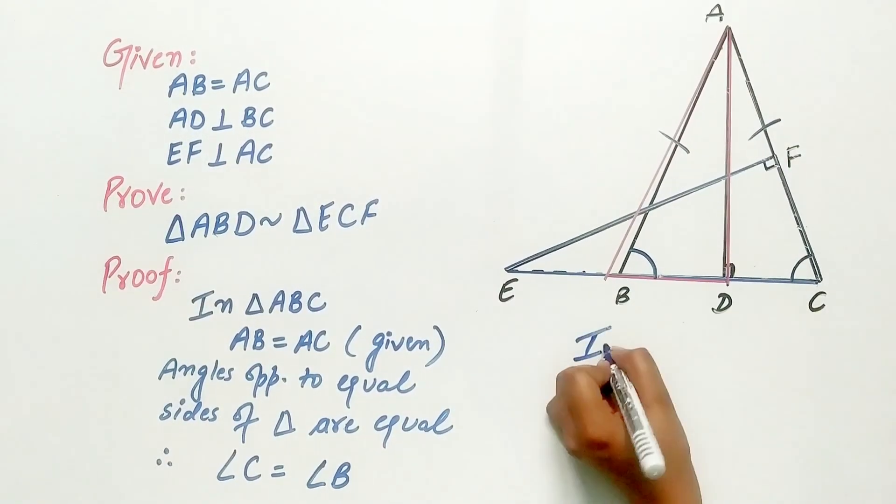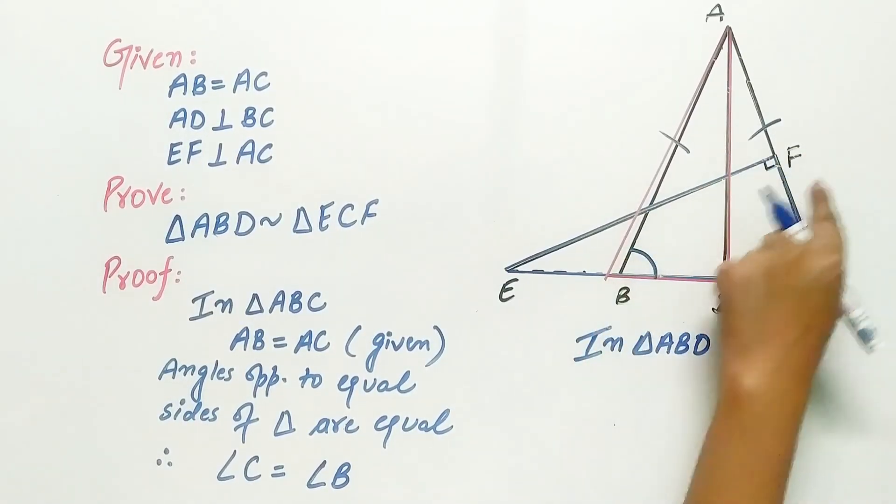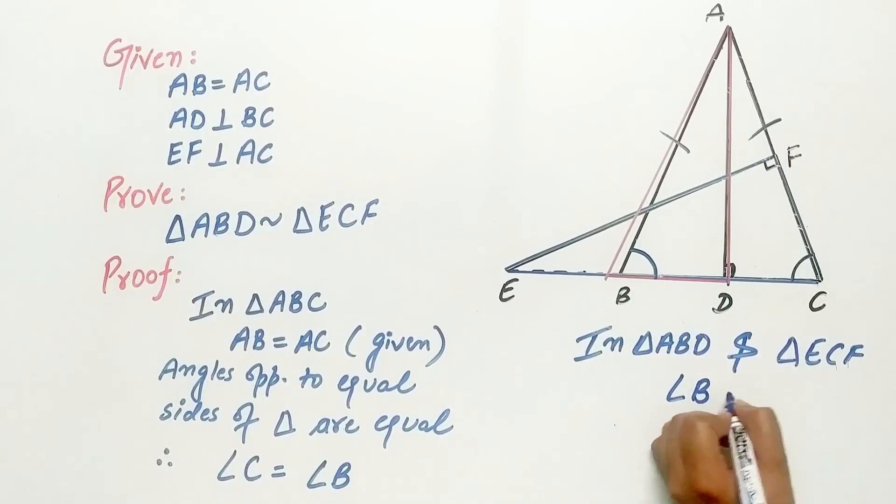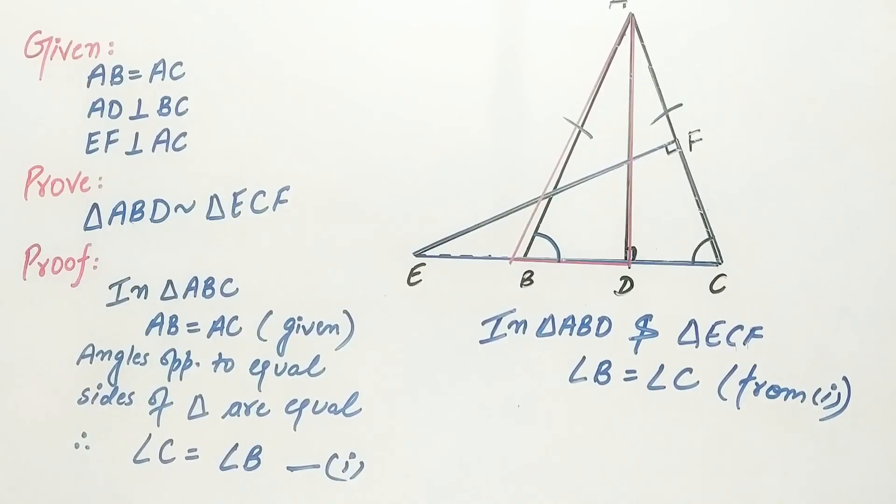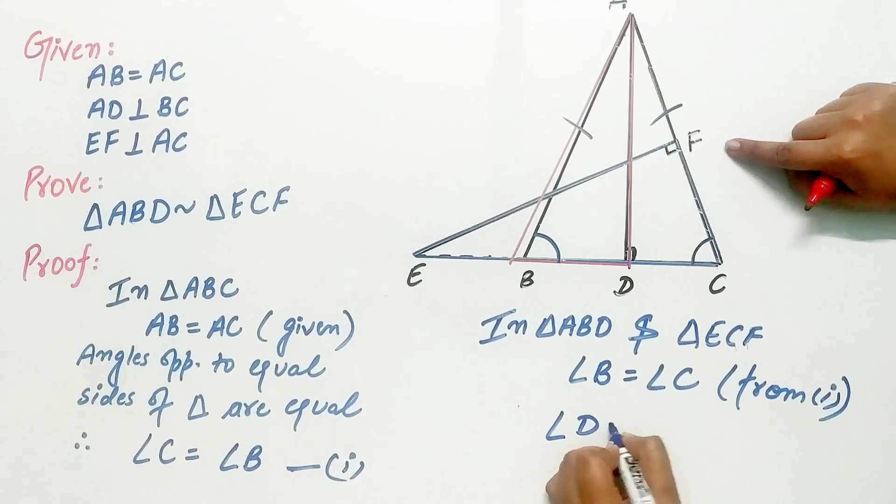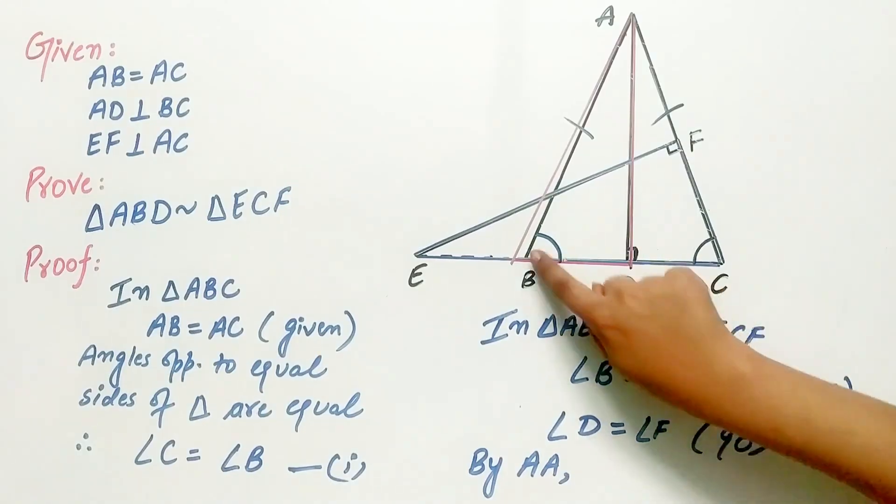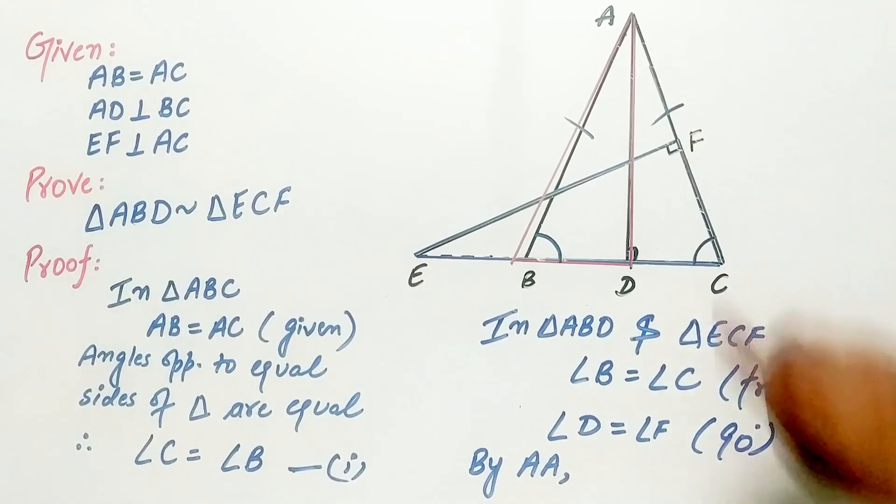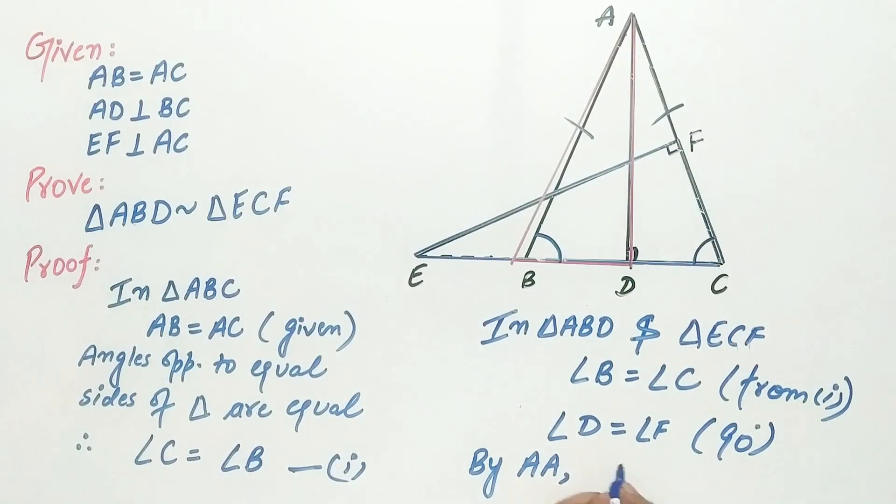Now in triangle ABD and triangle ECF, angle B is equal to angle C from the first statement, and angle D is equal to angle F. Why? Because they are both 90 degrees. Hence by AA, both triangles ABD and ECF are similar and hence